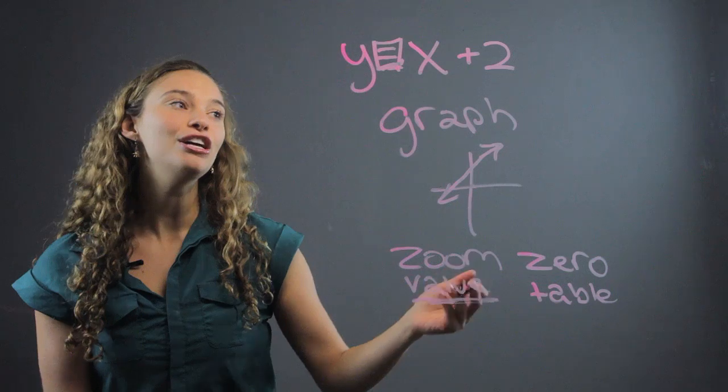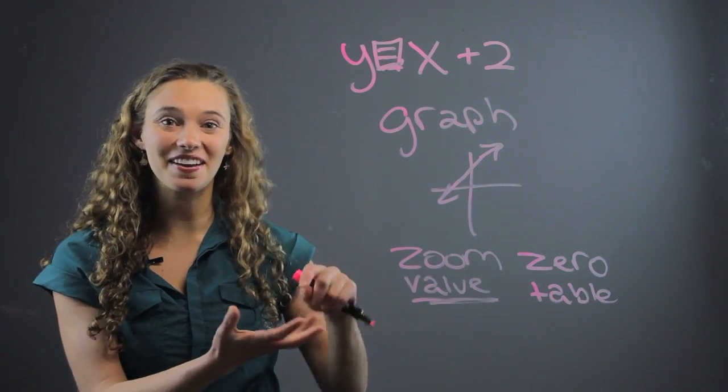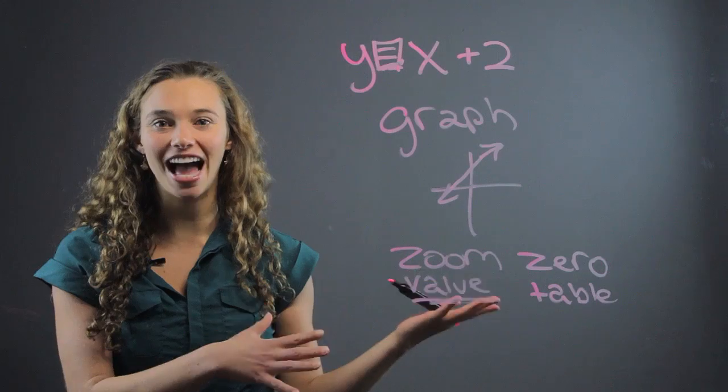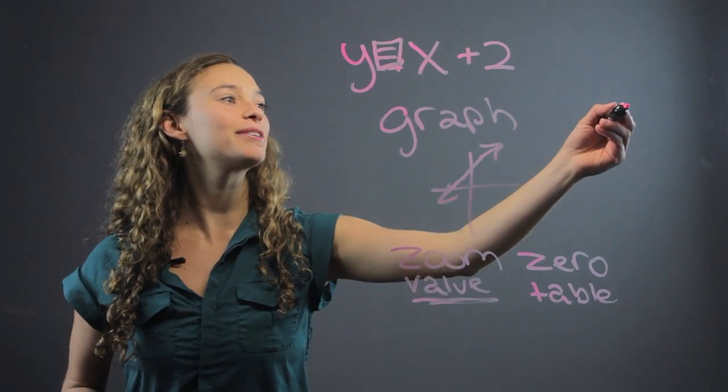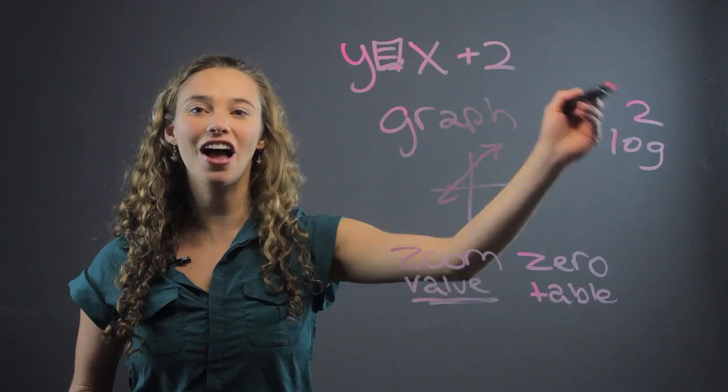And it'll take the log of the number. Don't write log and then the number, because then it'll write infinity because you've taken a log of that. So make sure you write the number 2 and then push log, and that's how you write the log of 2.